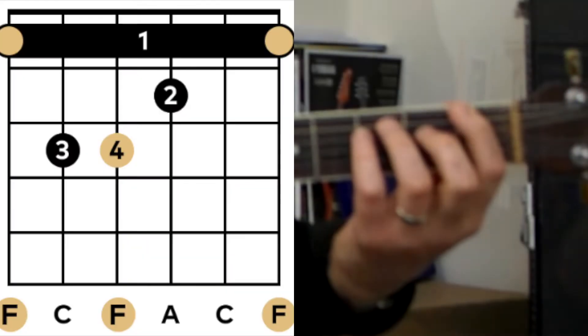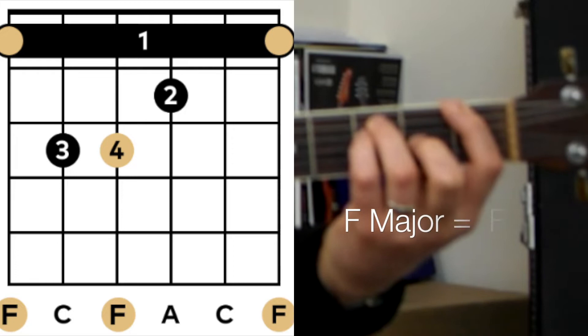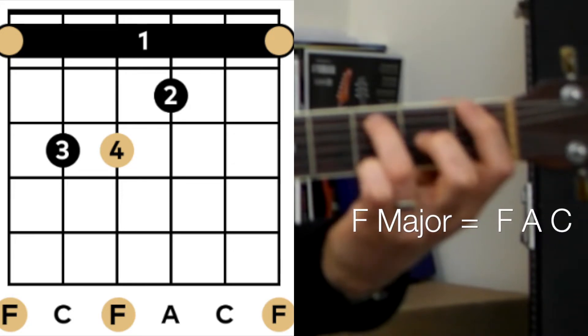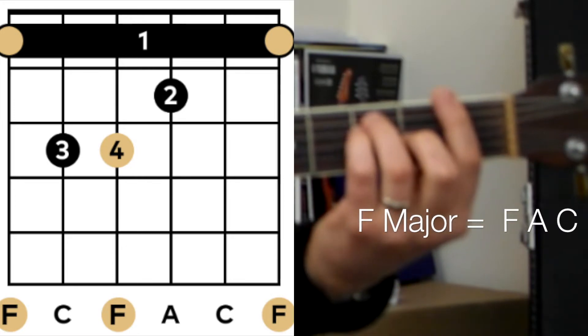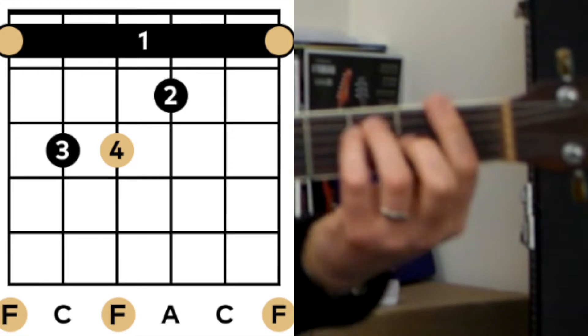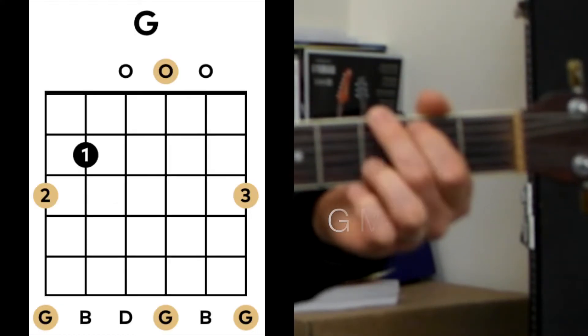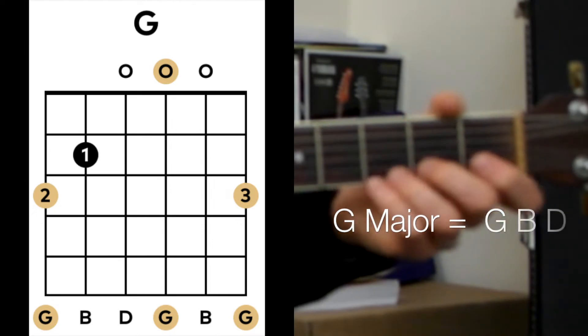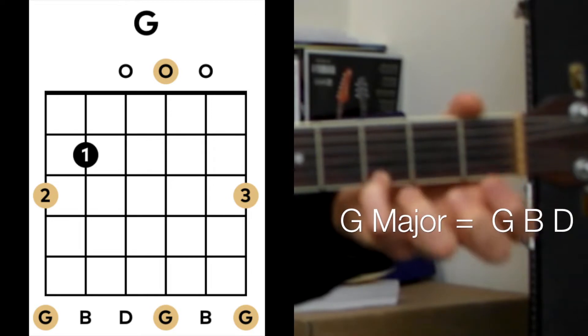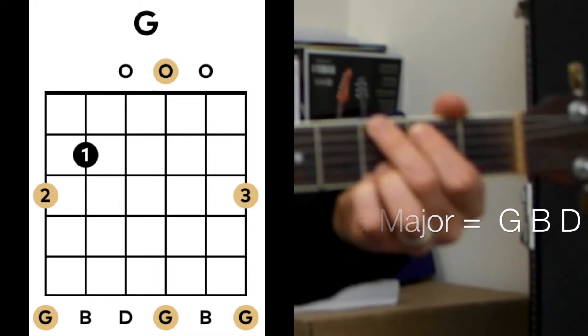And the F major is F, A, and C. F, F, and that's your C, and that's your A. And you've got another C, another F there. And your G major is G, B, and D. G, B, and D. G, G, and then you can either go D and G, or B and G. So that's the two options there.